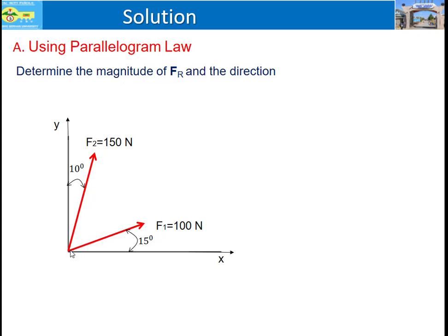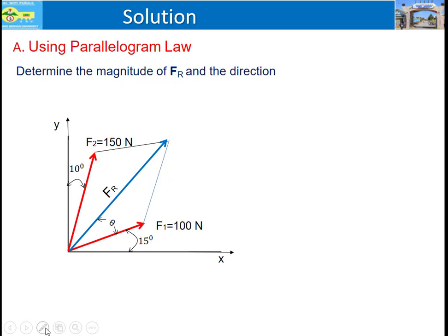Once the two forces are joined at a point, we can construct a parallelogram for the two forces. As we can see, this is the parallelogram shape. FR is the resultant vector of the two forces, and the angle between F1 and the resultant force FR is theta.